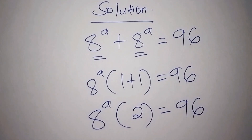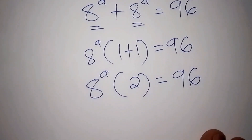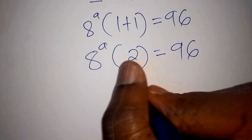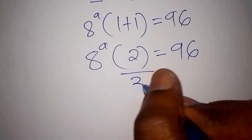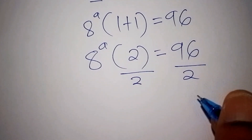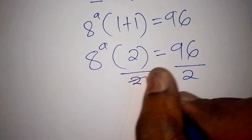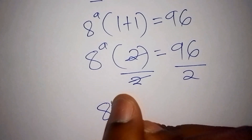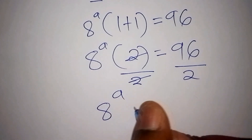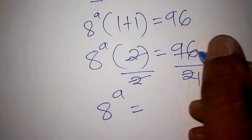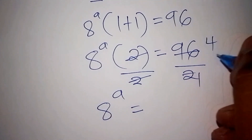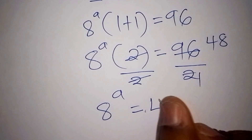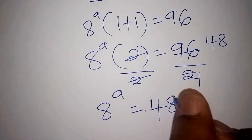From here, we shall divide both sides by 2. The 2s cancel, so 8 to the power of A equals 96 divided by 2, which gives us 48. So 8 to the power of A equals 48.